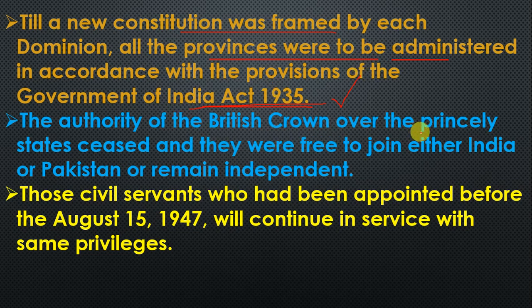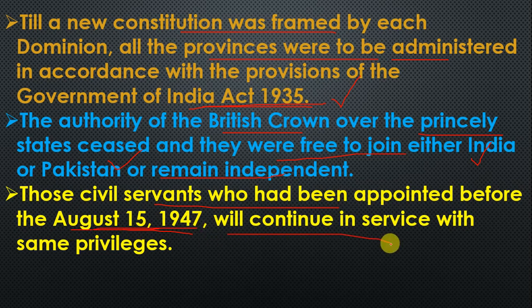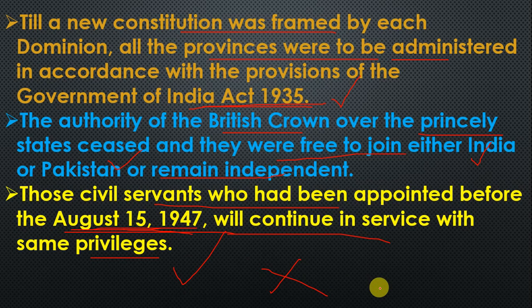The authority of the British Crown over the princely states ceased, and they were free to join either India or Pakistan or remain independent. Those civil servants who had been appointed before 15th August 1947 would continue in service with the same privileges. But after 15th August 1947, no more appointments would be made by the British Government — either India or Pakistan would handle their own appointments.